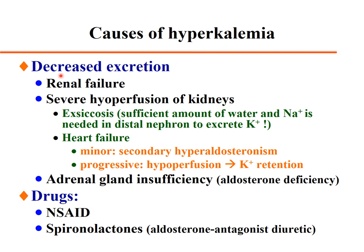Causes leading to hyperkalemia also include decreased excretion through the kidney due to renal failure, severe hypoperfusion as in exsiccosis — because excreting potassium requires sufficient water and sodium in the distal nephron. Heart failure inducing secondary hyperaldosteronism due to edema, or progressive heart failure causing hypoperfusion and potassium retention.